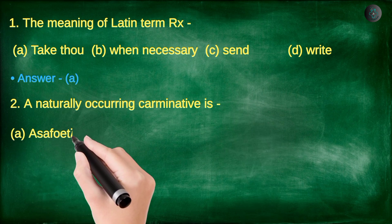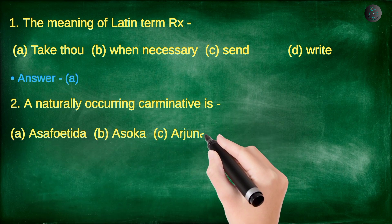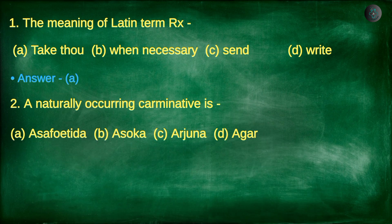Time for the second question. A naturally occurring terminative is: A. Asafetida, B. Asoka, C. Arjuna, D. Agar.